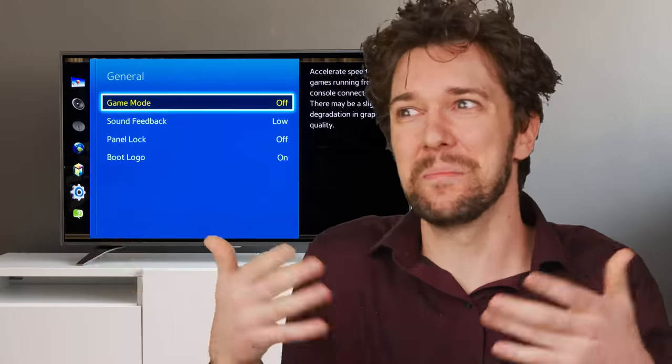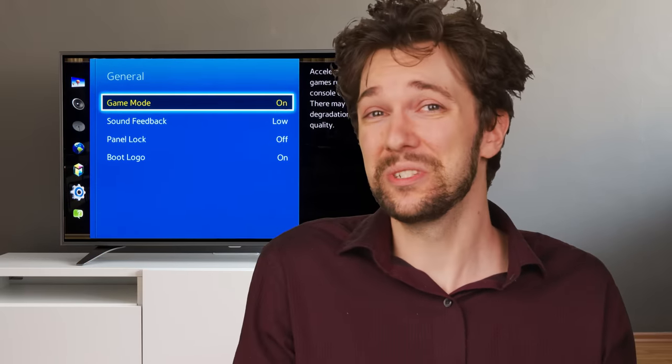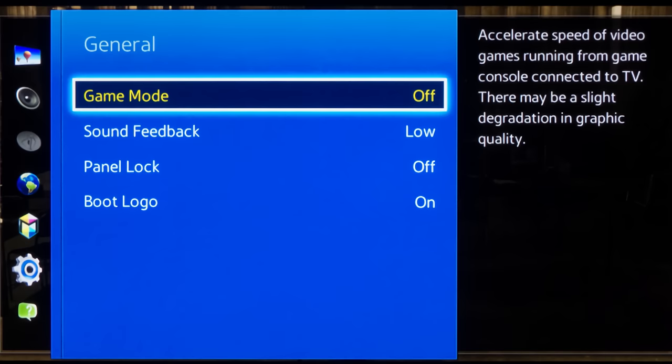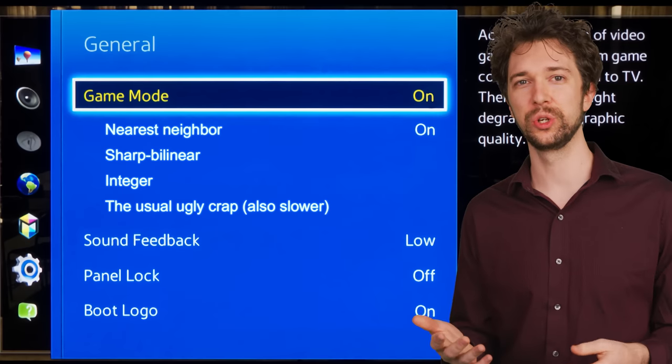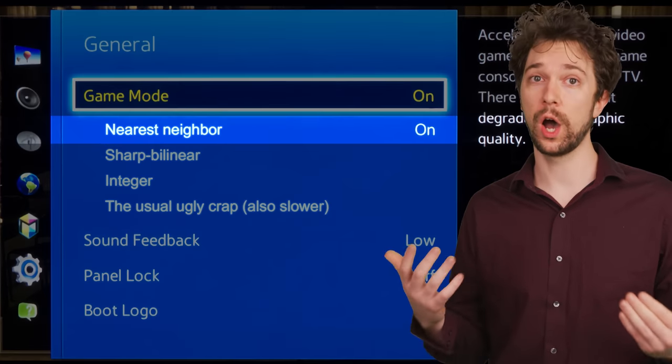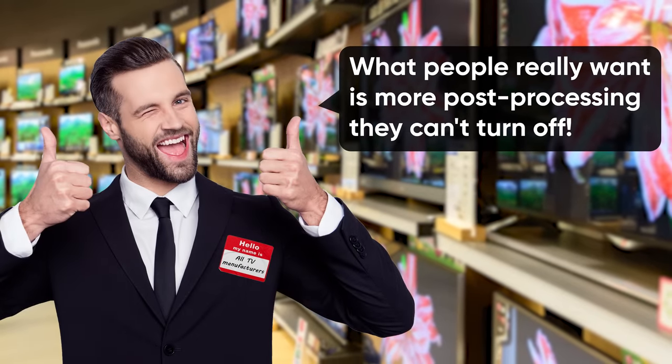But wait, I hear you say, my TV already has a game mode setting. Why doesn't it just use Nearest Neighbor for that? Well, the manufacturer would have to include a Nearest Neighbor menu option, which doesn't sound so hard. As for why they don't do that, I don't know. TV manufacturers just don't care, I guess. Maybe because not enough consumers know or care about this problem.